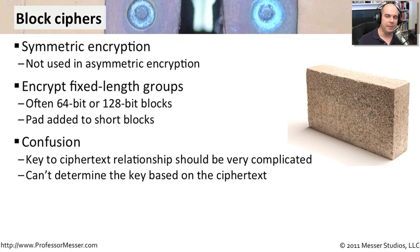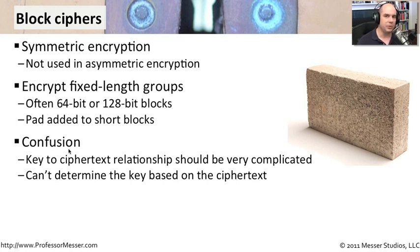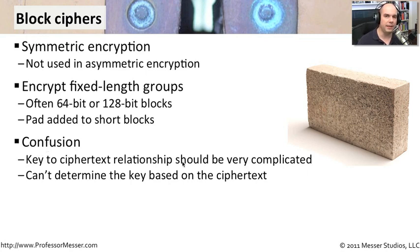There are a couple of things we should keep in mind when working with these ciphers. One is called confusion. That means the resulting cipher text should look very different than your key. There should not be a way to look at the encrypted data and figure out the key based on what you're seeing. That is called confusion — it means there is a very complex relationship between the key and the cipher text that is created.